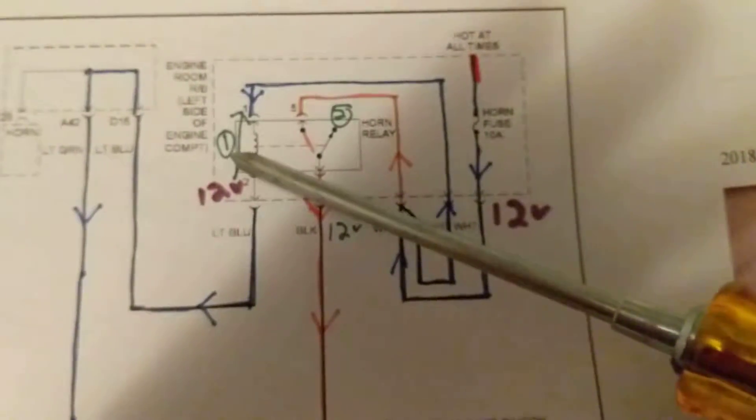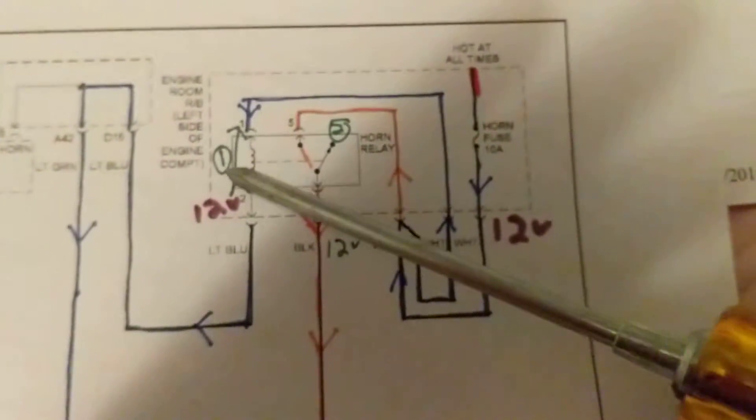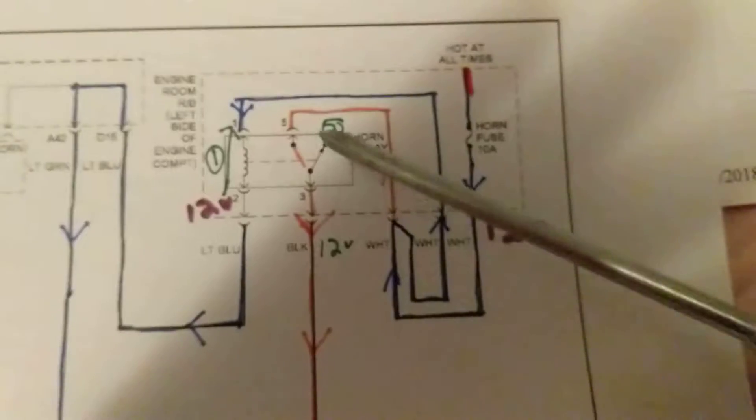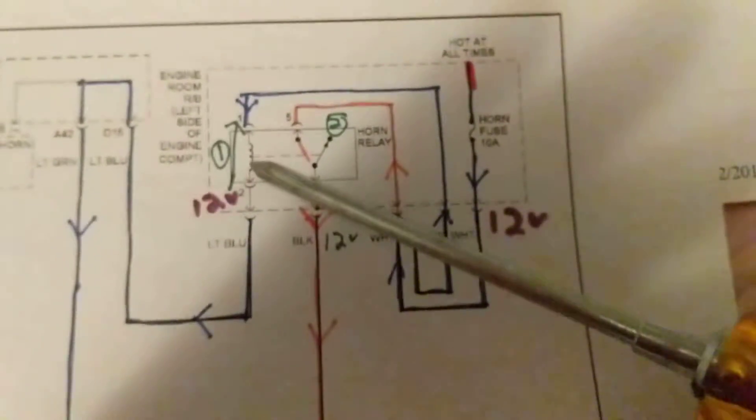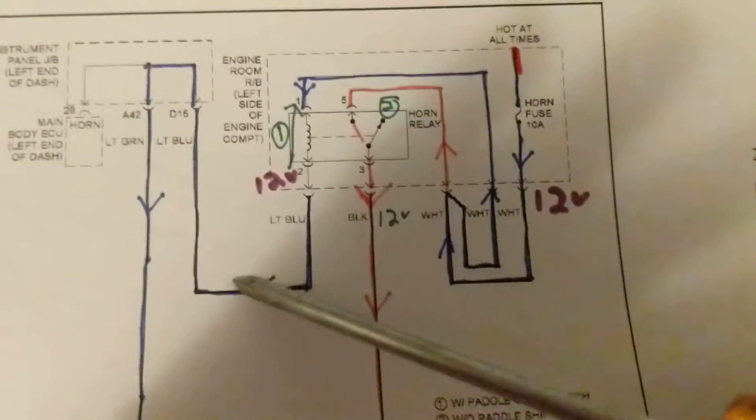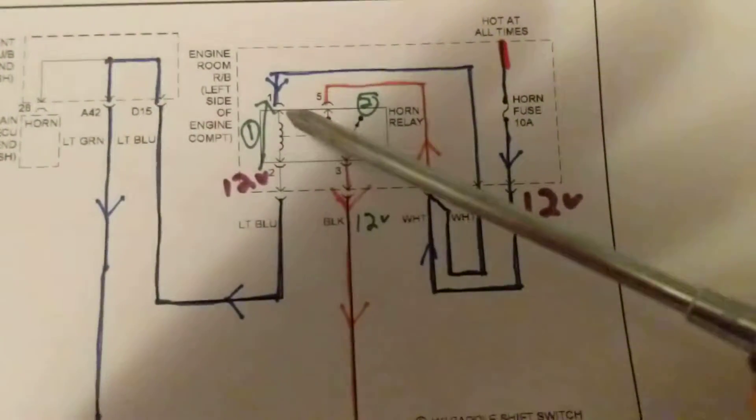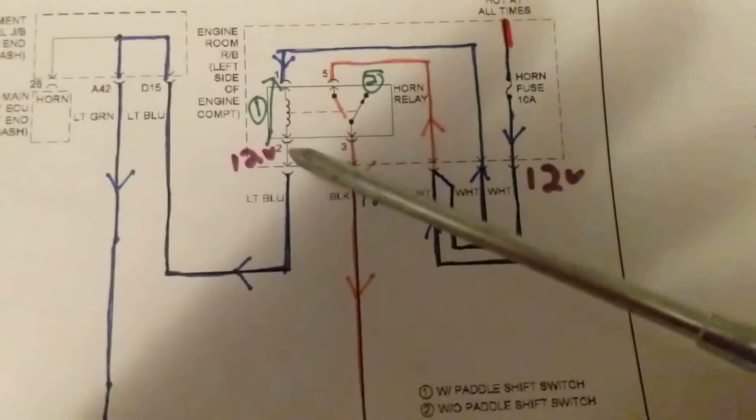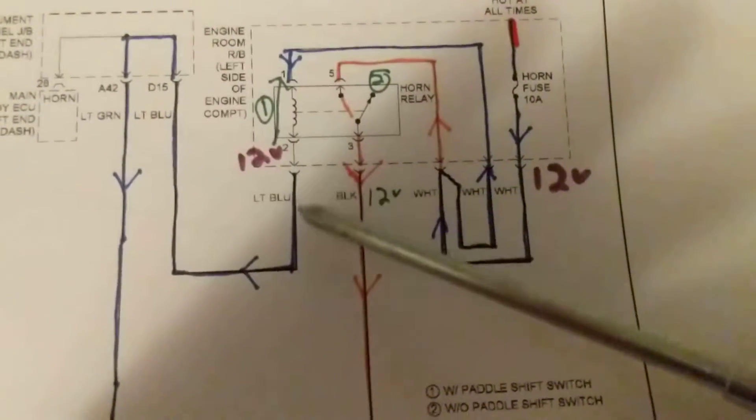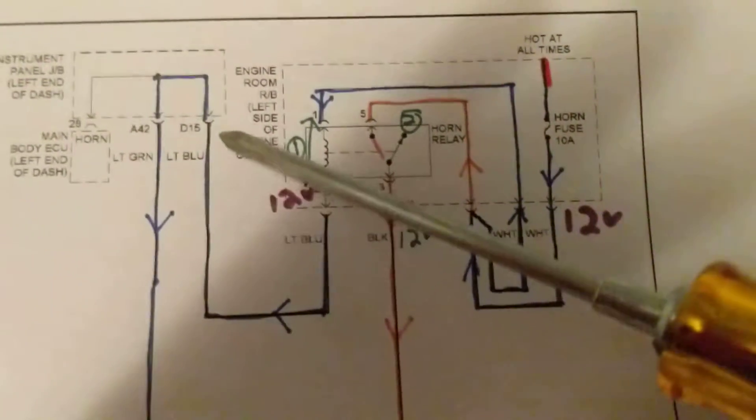And I put one over here, that means this is a sequence. This has to first happen, then number two will happen. The sequence will be this way. We go this way, light blue wire, actually pin number two. We come out, we go in number one, come on pin number two of the horn relay over here.